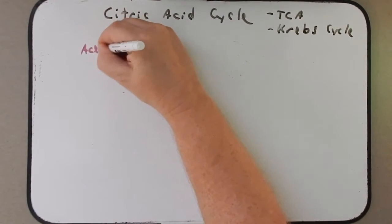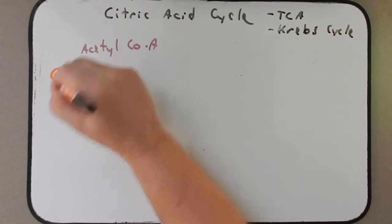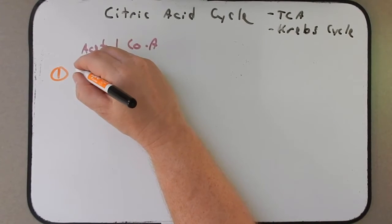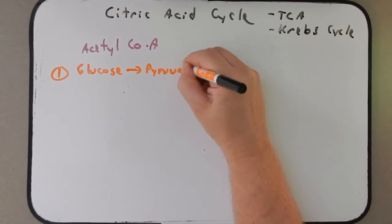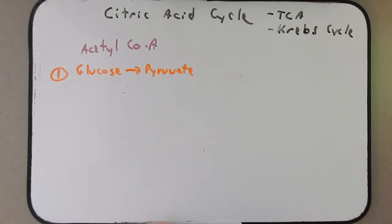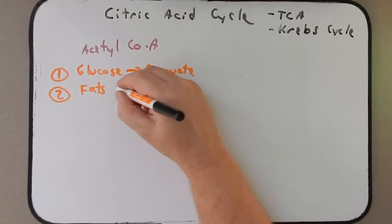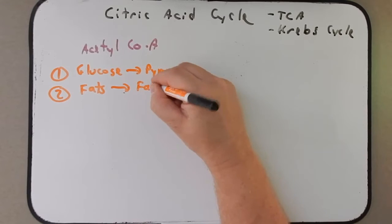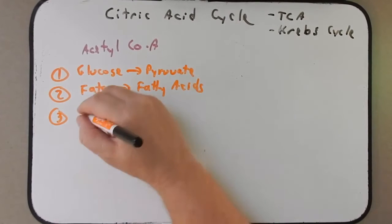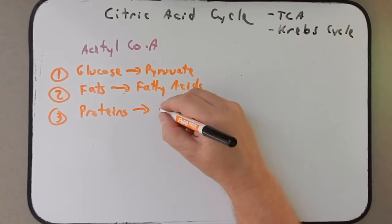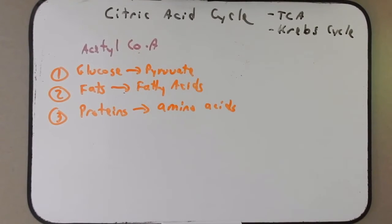So where does acetyl coenzyme A come from? How does the cell produce it? There are three main pathways. Acetyl coenzyme A can be made from the breakdown of glucose, which is then made into pyruvate through glycolysis, and then pyruvate is converted into acetyl coenzyme A. Secondly, cells can take fats, break them down into fatty acids, and those fatty acids can be converted into acetyl coenzyme A. And lastly, proteins can be metabolized into amino acids, and those amino acids can then be converted into acetyl coenzyme A.